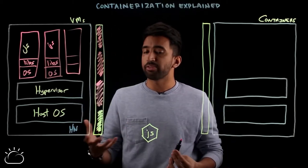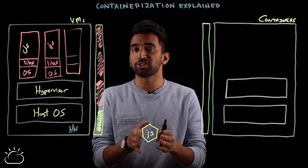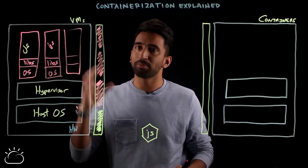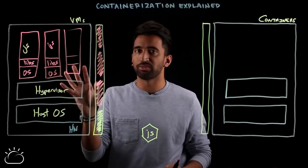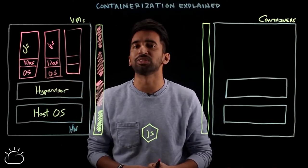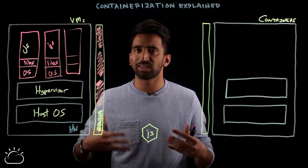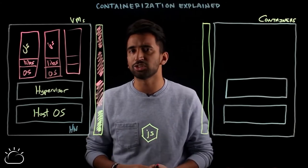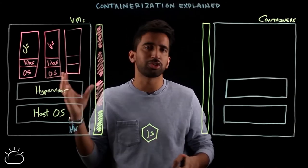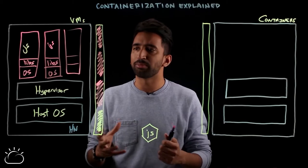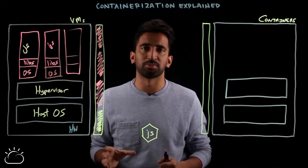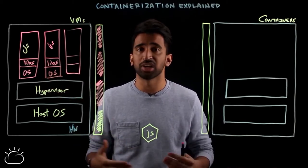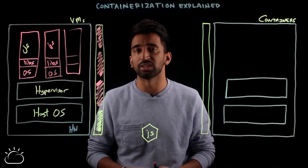There's another thing worth mentioning: this JS application was developed on a MacBook. When I pushed it into production to run on the VM, I noticed there were some issues and incompatibilities. This is the foundation of the 'it works on my machine' problem — things might work great locally but break when pushed into production, which really gets in the way of agile DevOps and continuous integration and delivery.